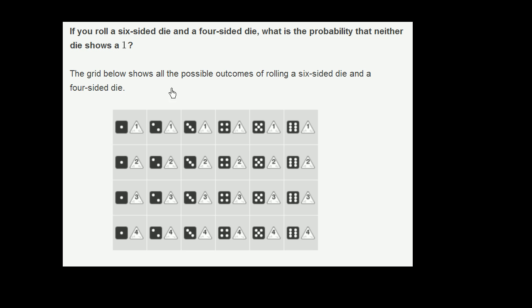The grid below shows all the possible outcomes of rolling a six-sided die and a four-sided die. We're fairly familiar with six-sided dice — those are the cubes from board games we've been playing our entire lives, and your roll is whatever face is facing up.